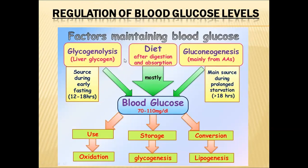Three factors help increase blood glucose levels: glycogenolysis, diet, and gluconeogenesis. Diet is the major factor — we eat food, it is digested, absorbed, and all the glucose enters into the blood. Diet is therefore the major source for maintaining blood glucose levels.